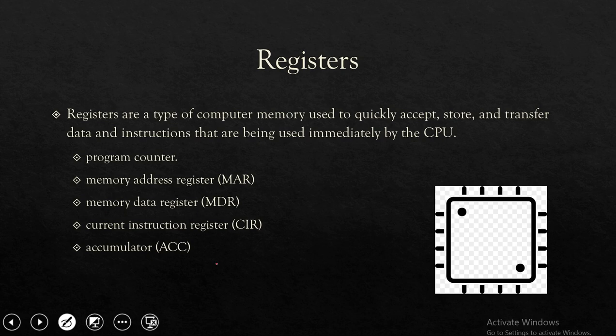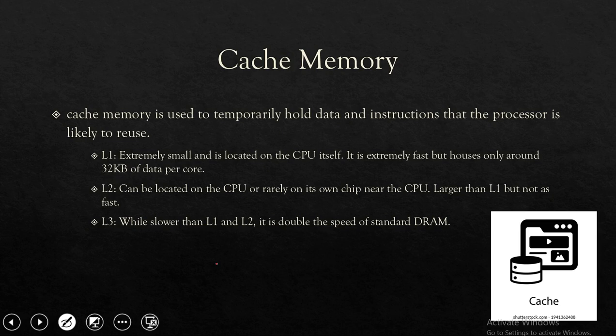Cache memory is used to temporarily hold data and instructions that the processor is likely to reuse.